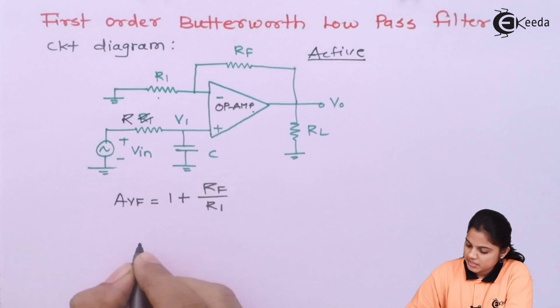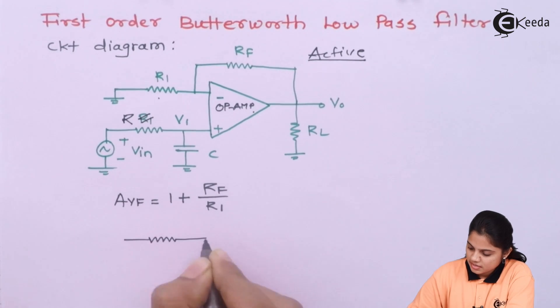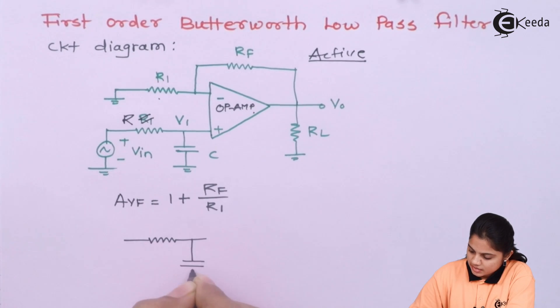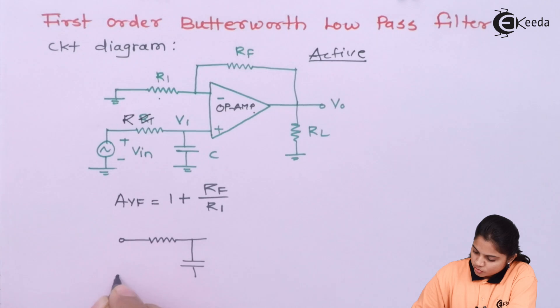Now if you see the circuit separately, that is a resistance and capacitor are connected in such a way. And here, you are applying the input and here, you are taking the output.